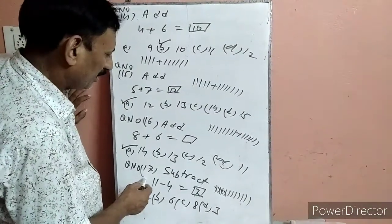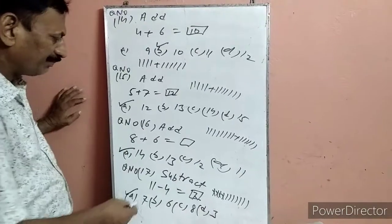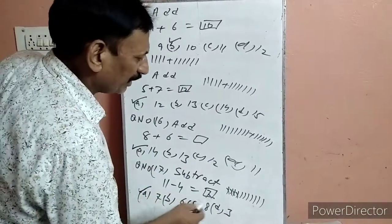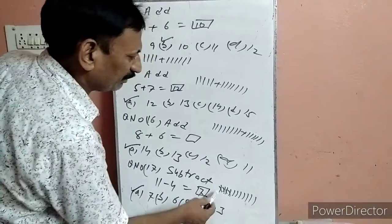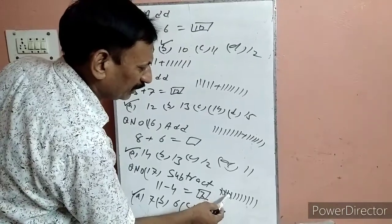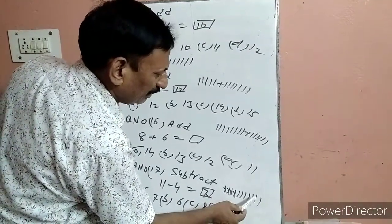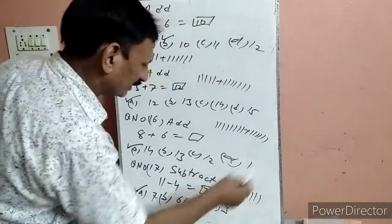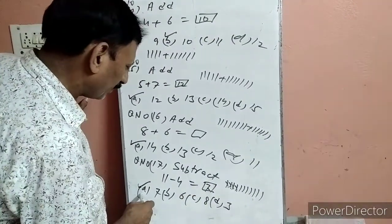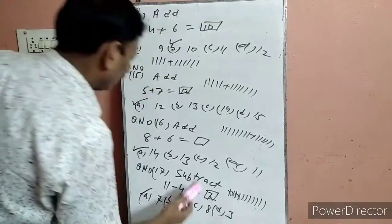Question 17: Subtract — 11 minus 4. Subject means घटाई. 11 line drop करेंगे, 4 को cross करेंगे: 1, 2, 3, 4. बच गया: 1, 2, 3, 4, 5, 6, 7. Answer 7. 7 option को देखेंगे — पहला option A पर हमने टिक लगा दिया.